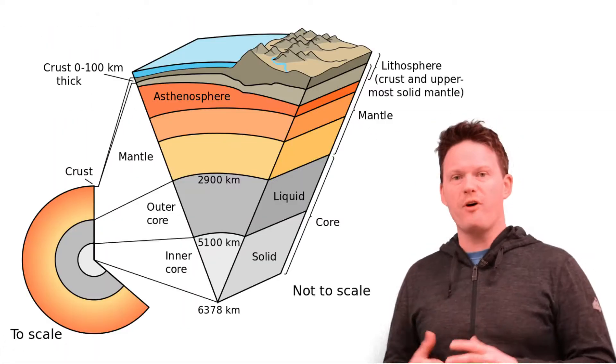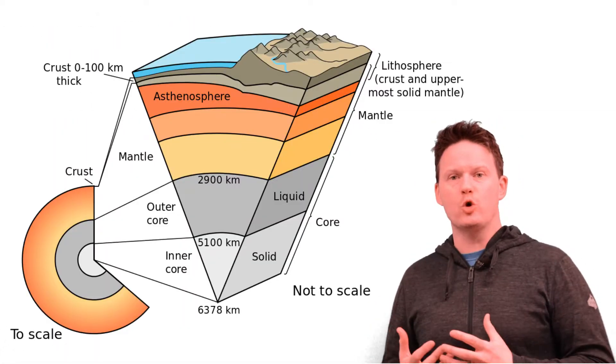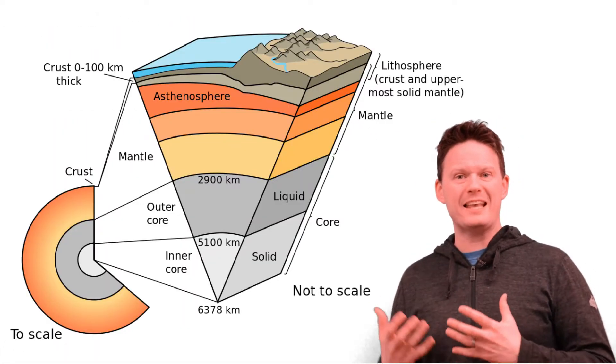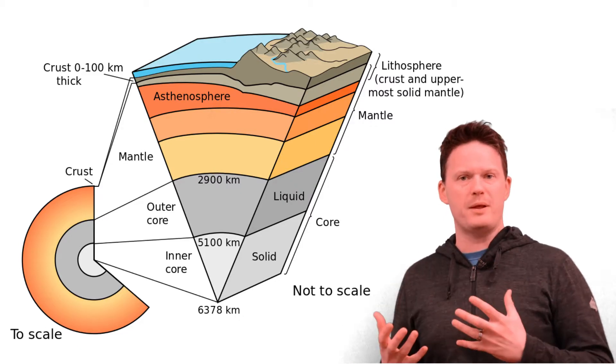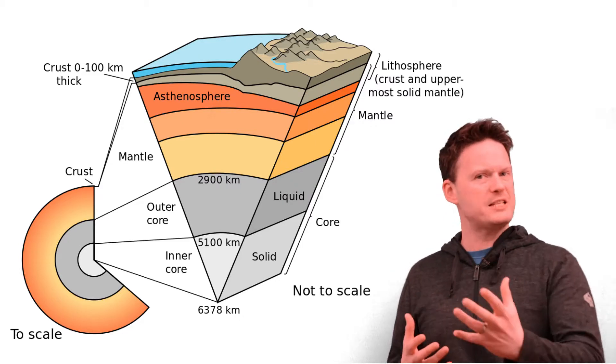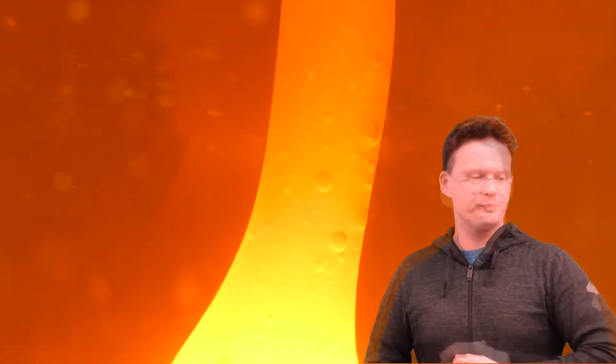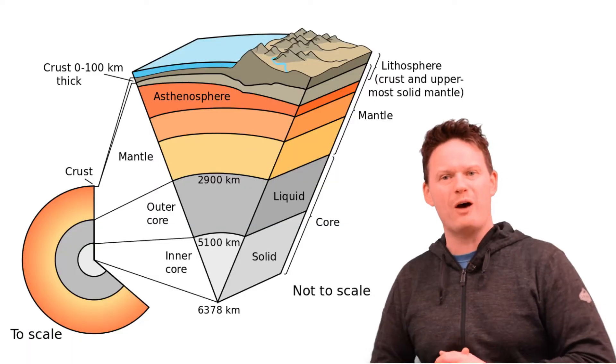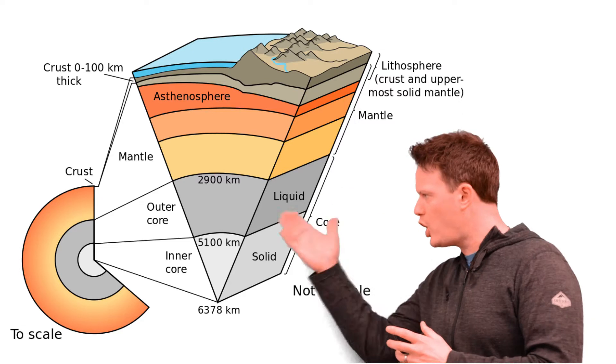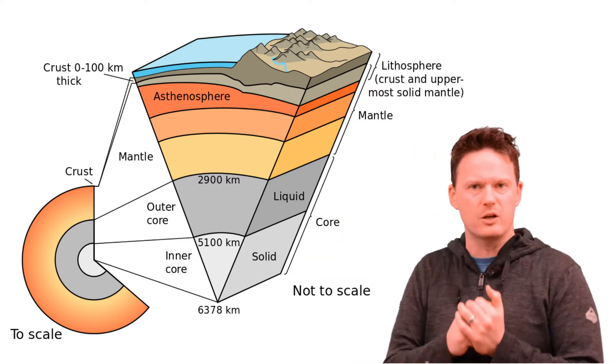Next we find our outer core, which is again incredibly hot, but this time it is molten. It is also made out of iron and nickel. The mantle is the thickest part, being approximately 2,900 kilometers in thickness.